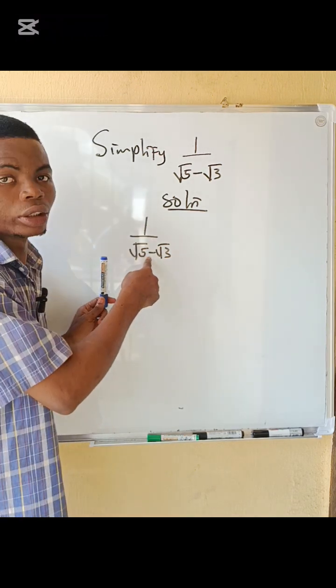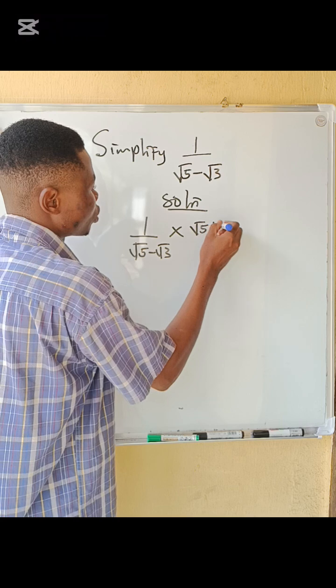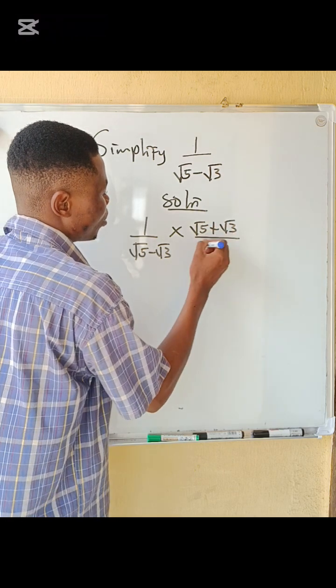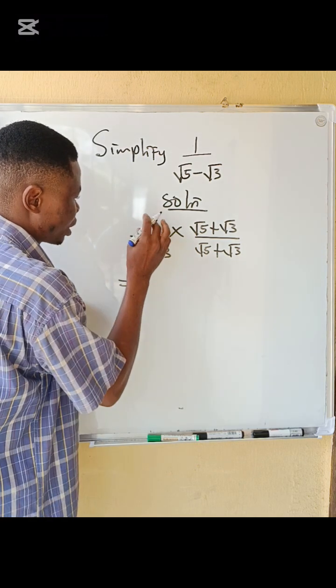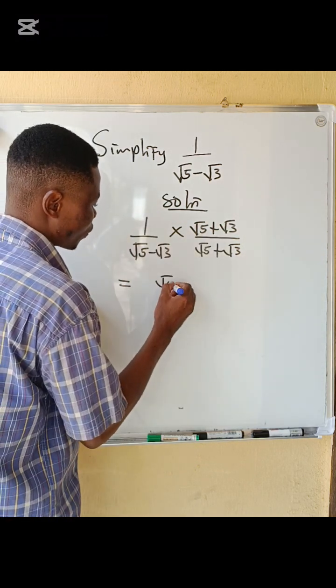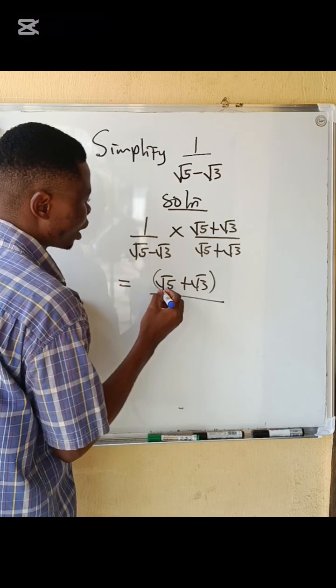This is going to be square root of 5 plus square root of 3 over square root of 5 plus square root of 3. The numerator gives you square root of 5 plus square root of 3. For the denominator, root 5 times root 5 gives you 5, root 5 times root 3...